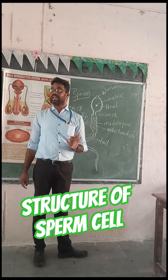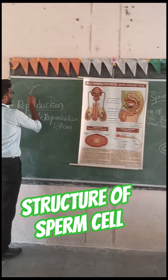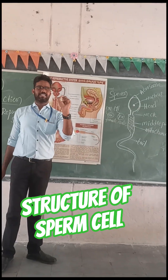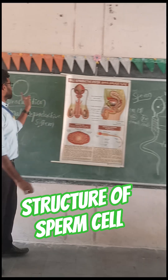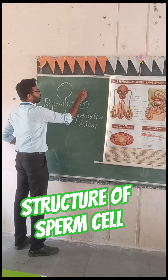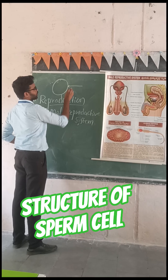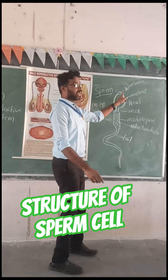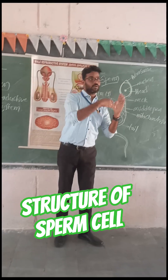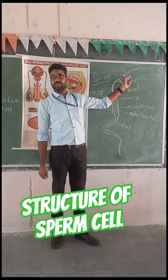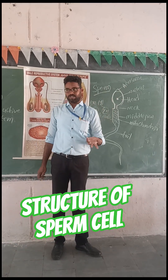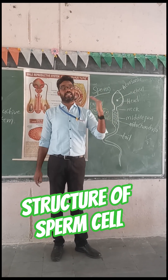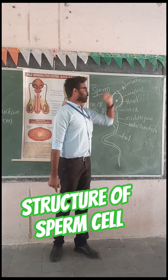This acrosome is very important for fertilization. The ovum is large when compared to the sperm. Sperm is a very, very small cell in the human body, but the ovum is bigger than the sperm. The acrosome is very important for the sperm to penetrate into the ovum. Sperm penetrates into the ovum with the help of the acrosome — that is the use of the acrosome.